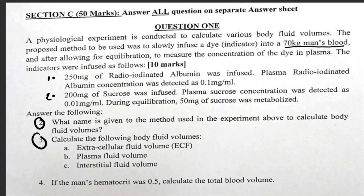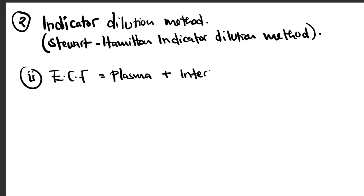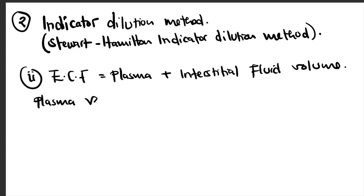Question three asks us to calculate the following body fluid volumes: extracellular fluid, plasma fluid, and interstitial fluid. What we know is that the ECF — extracellular fluid — is equal to plasma volume plus interstitial fluid volume. We've been asked to calculate all three of these.